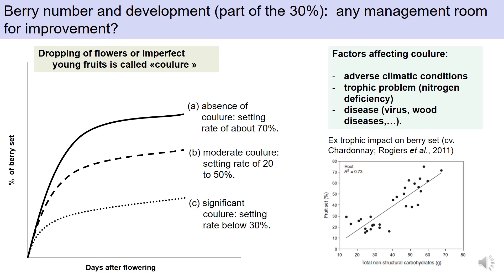During flowering and fecundation, it is possible to get what we call in French coulures and millerandages, which result in the drop of flowers or young berries. This is due to problems with fecundation linked to climatic and physiological issues, and it is where a vine can really lose a significant amount of future yield. Apart from abiotic factors, remember that diseases can also affect flowering and fecundation, meaning diseases can affect the 70% of the yield component.